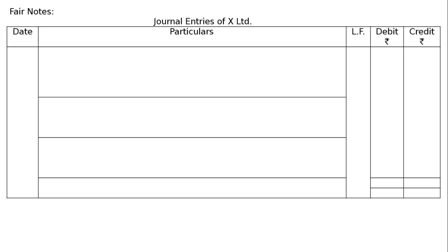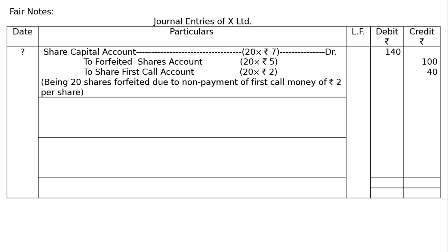Journal entries of X-Limited — Date, Particulars, Folio, Debit Rs., Credit Rs. For forfeiture: Share Capital Account Dr. 20 × 7 = Rs.140 (Rs.5 application and allotment + Rs.2 first call = Rs.7 called up). To Forfeited Shares Account Rs.100 (20 × 5), To First Call Account Rs.40 (20 × 2). Being 20 shares forfeited due to non-payment of first call money of Rs.2 per share.